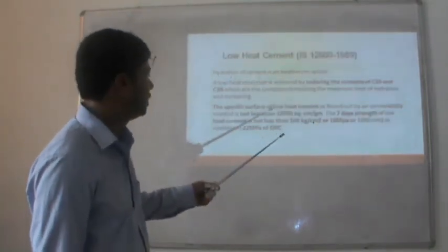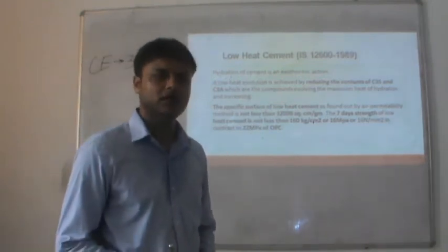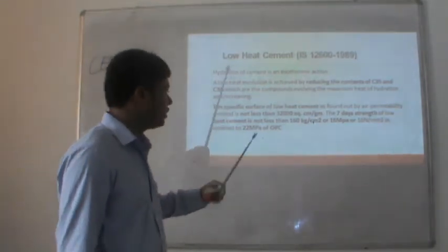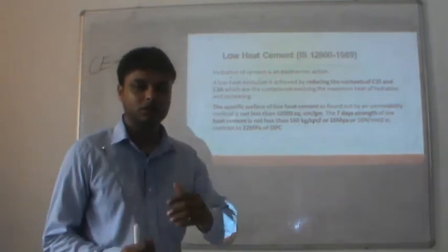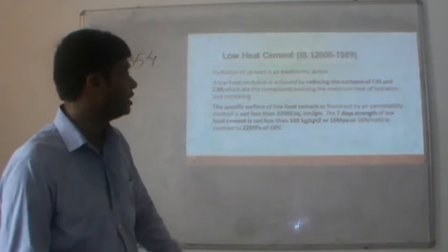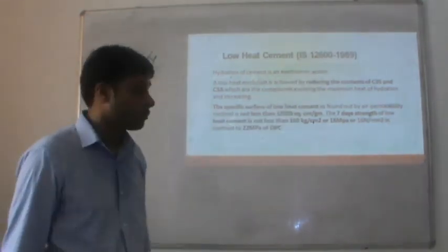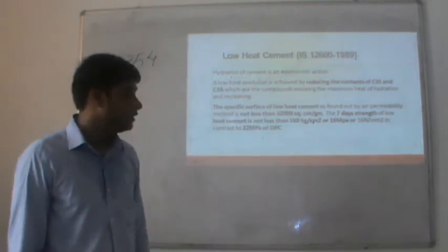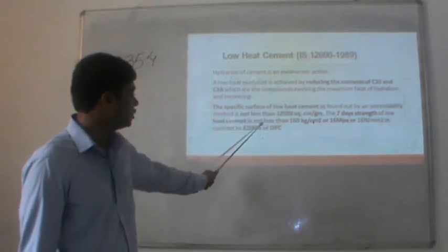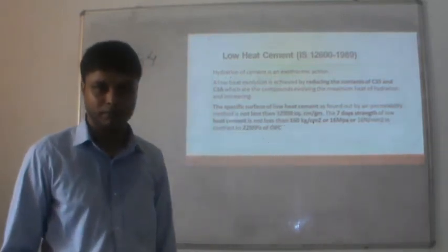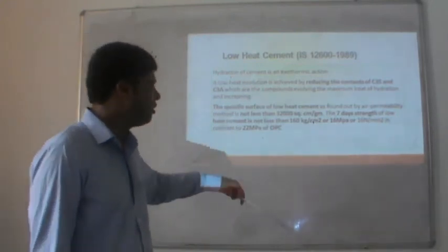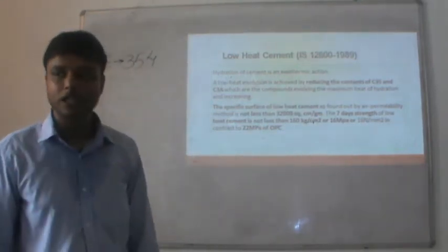Low Heat Cement, where the amounts of C3A and C3S are less, as per British Standard BS 1230:1989, has a specific surface of not less than 32,000 cm² per gram. The 7-day strength of Low Heat Cement is not less than 160 kg/cm² (16 MPa), in contrast to 220 kg/cm² for normal Portland cement.